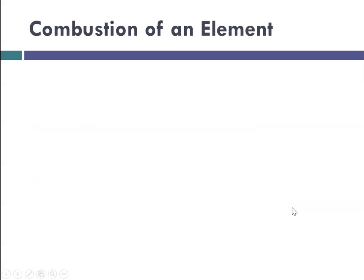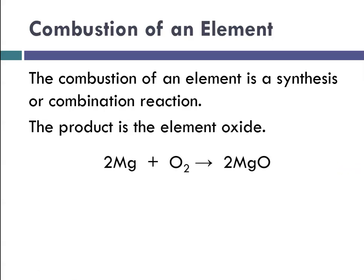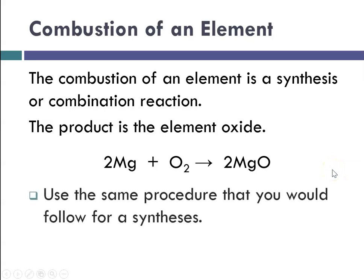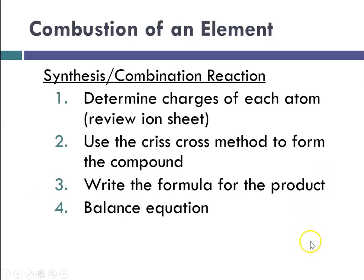So we'll start with the combustion of an element. And in the combustion of an element, it's really a synthesis or combination reaction, which we've done before. And your product will be the element oxide. It's combining. And so an example here would be magnesium plus oxygen, and you get magnesium oxide. And to predict these, you use the same general procedure that you would follow for any synthesis or combination reaction.